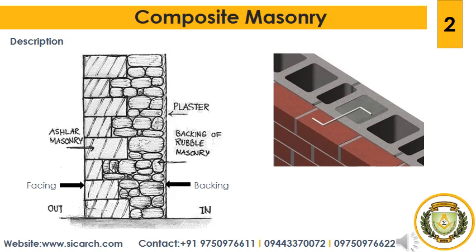Next we will see what composite masonry is. When walls are constructed with two or more types of building materials, it is termed as composite masonry. Composite masonry is adopted for the following reasons: it reduces the overall cost of construction, makes the structure more durable by providing better quality materials and good workmanship in the faces, improves the appearance by concealing inferior work, and makes use of locally available materials to obtain optimum economy.